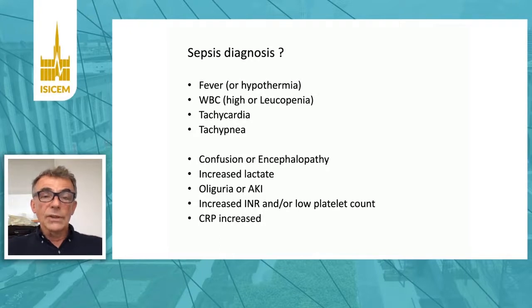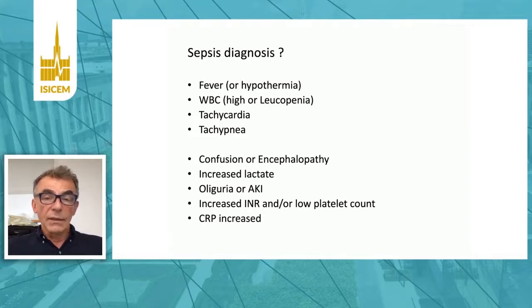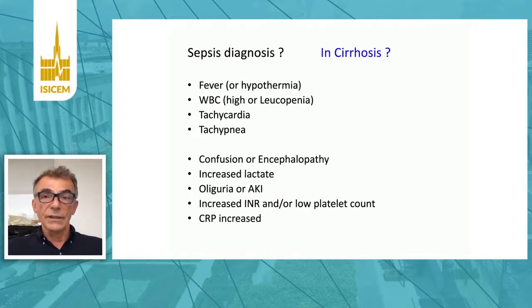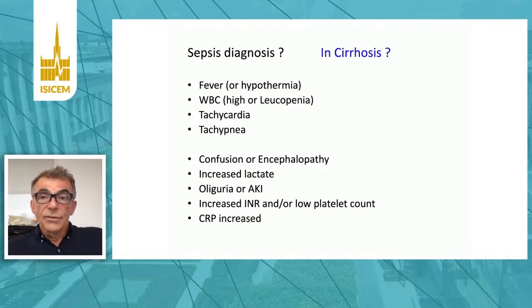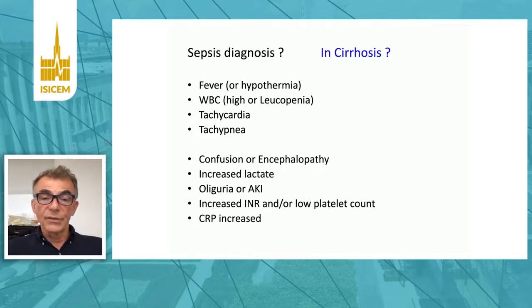The common diagnostic network includes fever, change in the white blood cell count, tachycardia, tachypnea, organ dysfunction including confusion, oliguria, change in hemostasis, and increased biomarkers like CRP. However, in cirrhosis, it is generally common not to have fever in the setting of infection. There's already a change in white blood cell count because of hypersplenism. These patients don't have tachycardia, and they often also have beta blockers. Confusion or encephalopathy is part of the picture and therefore not helpful. Oliguria, acute renal failure, and changes in hemostasis are by definition driven by the cirrhosis itself. CRP is synthesized by the liver and is not helpful, at least in advanced liver disease.